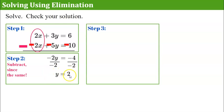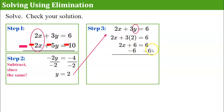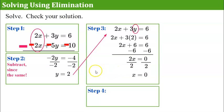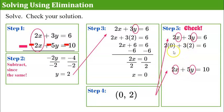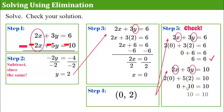Step 3: take the solution y equals 2 back into our first equation. Replacing y with 2: 2x plus 3 times 2 is 6. Subtracting 6 from each side gives 2x equals 0. Students get confused here — 0 is a number. Dividing both sides by 2 gives x equals 0. Step 4: write our solution as an ordered pair — x is 0, y is 2. Step 5: check. Substituting (0, 2): 2 times 0 plus 3 times 2 is 0 plus 6 equals 6 — it checks. And 2 times 0 plus 5 times 2 is 0 plus 10 equals 10 — it checks.